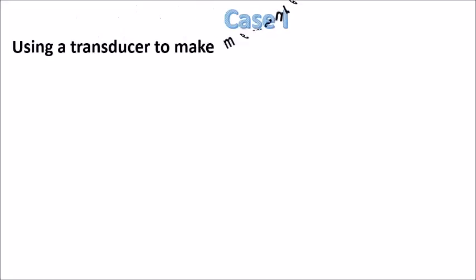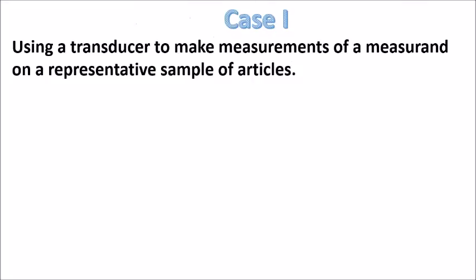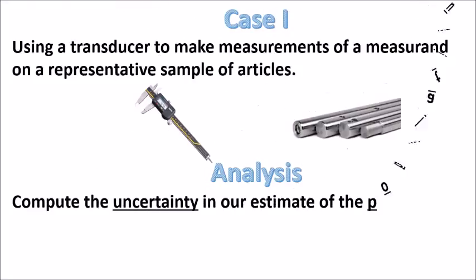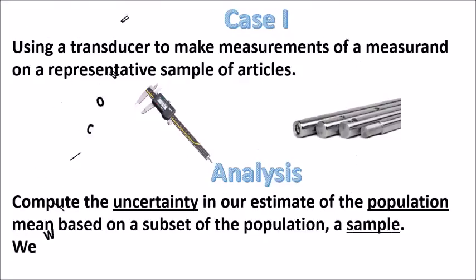For example, using a transducer to make measurements of a measurand on a representative sample of articles, such as using a Vernier caliper to measure the diameter of 30 machine shafts. In this case, we are seeking to compute the uncertainty in our estimate of the population mean based on a subset of the population, a sample.